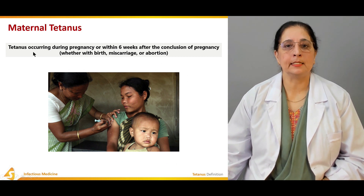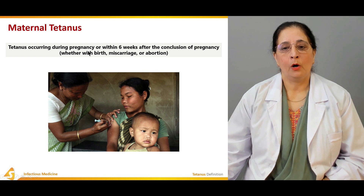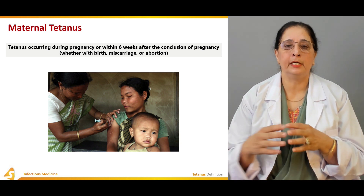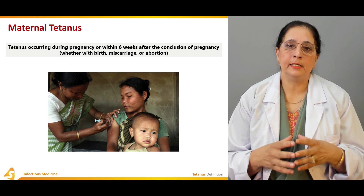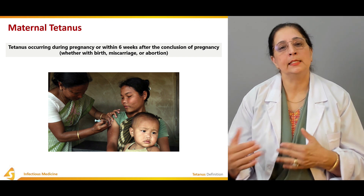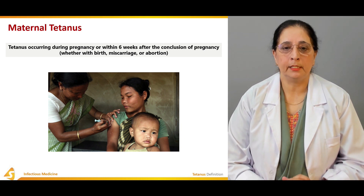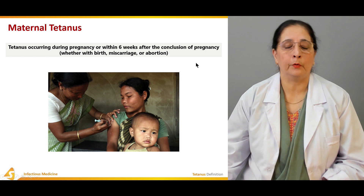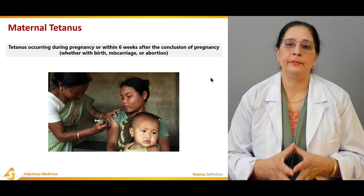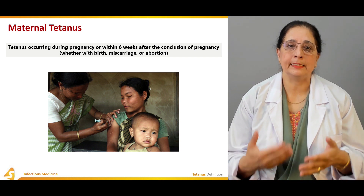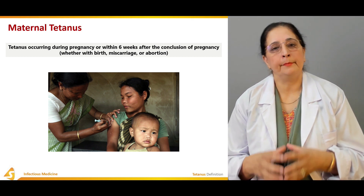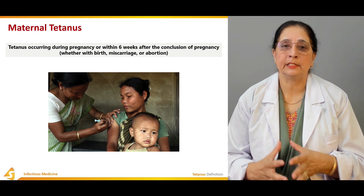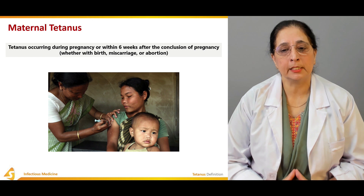Maternal tetanus is tetanus occurring during pregnancy or within six weeks postpartum — the six weeks after delivery. This can occur whether associated with birth, miscarriage, or abortion, as retained pieces of conception or retained placenta can become infected and cause tetanus. Miscarriages and abortions are a common risk factor for developing maternal tetanus.